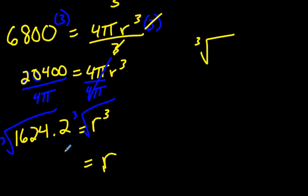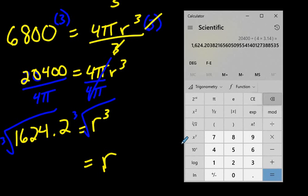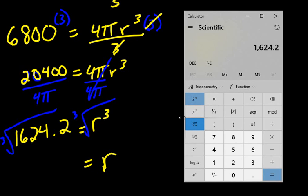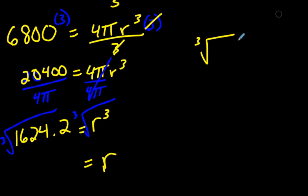Just going to push clear here. 1624.2 and now I'm going to look for the cube root sign and I don't see it here. So this calculator doesn't have it automatically. There it is, if I push second I notice that a cube root sign appears right here. So I'm going to hit that now and I'm going to round it off to one decimal, 11.8.